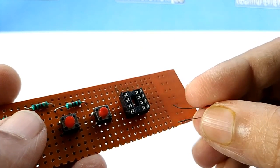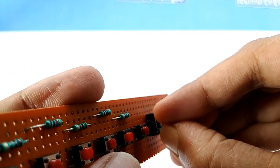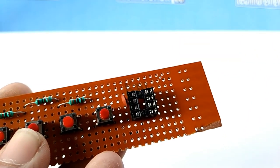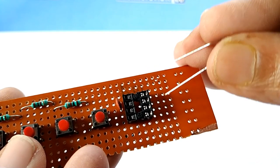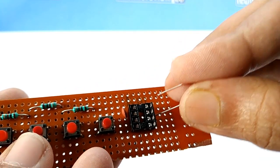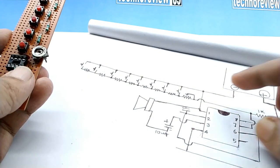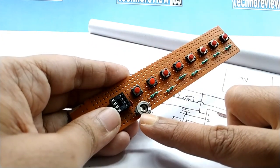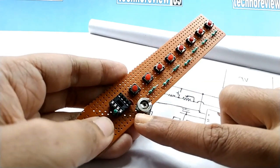Connect 0.1MF ceramic capacitor to IC pin 1 and 2. Connect 1K resistor between IC pin 7 and 8. Connect a 10K variable resistor to IC pin 7 and this 1K resistor.